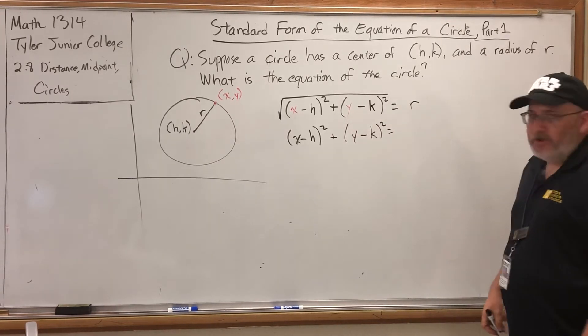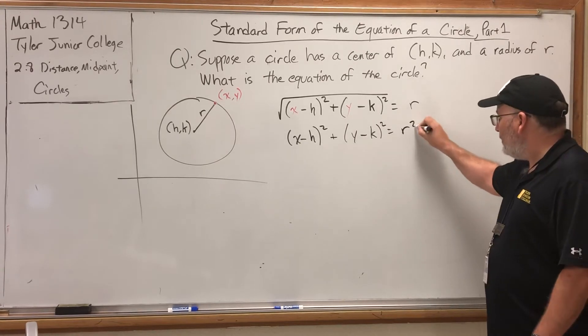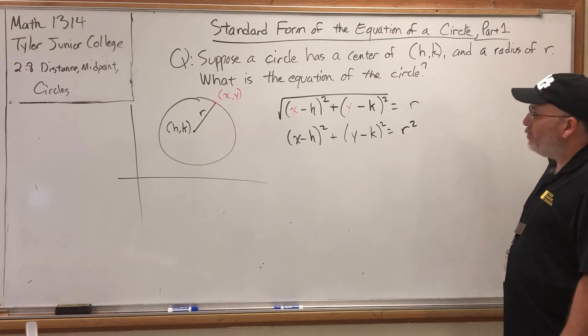And then if we square the right side of the equation also, we'll get r squared. And that's called the standard form of the equation of a circle.